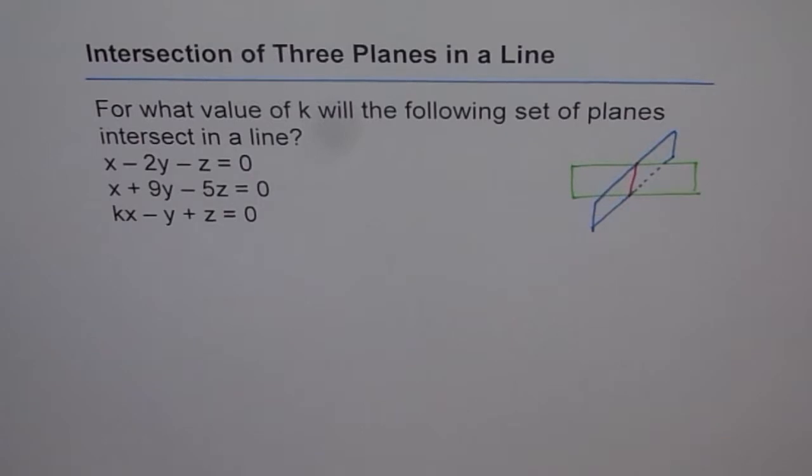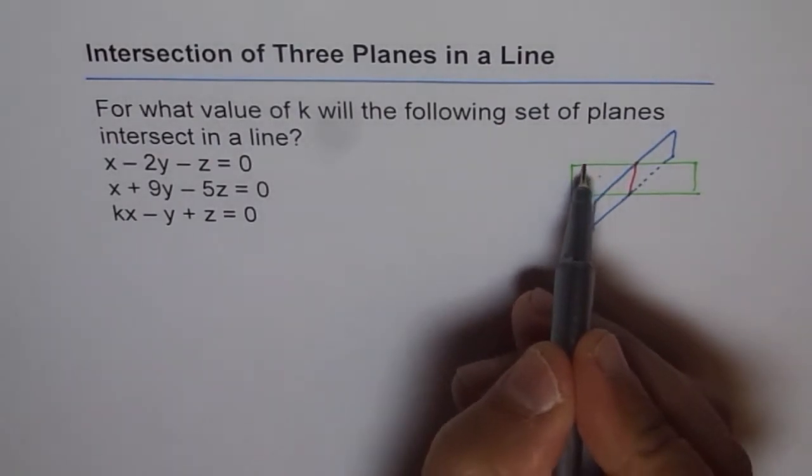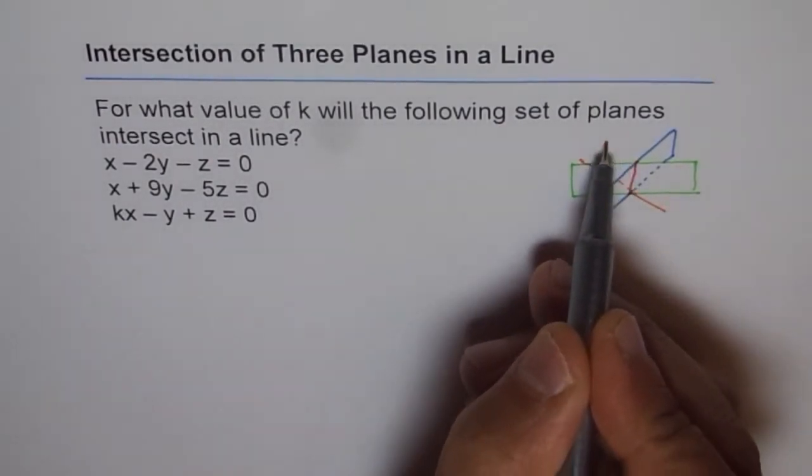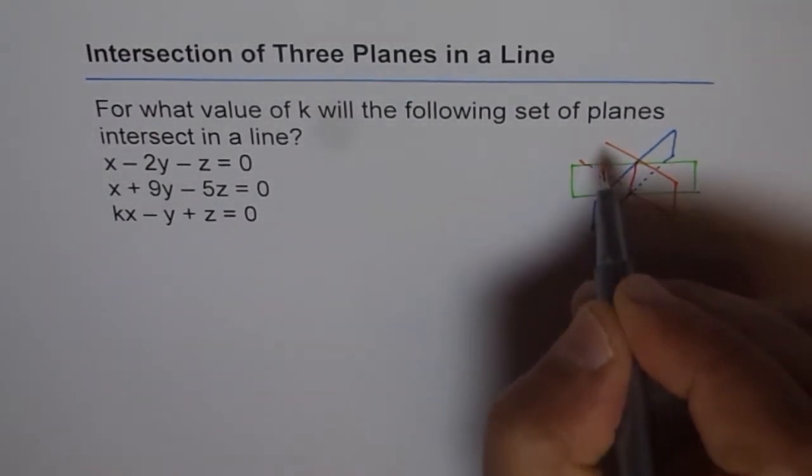So 2 planes intersect in a line and the third plane, if the third plane also intersects along the same line, something like this.